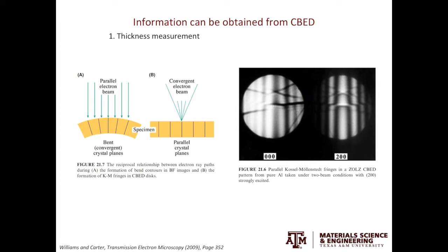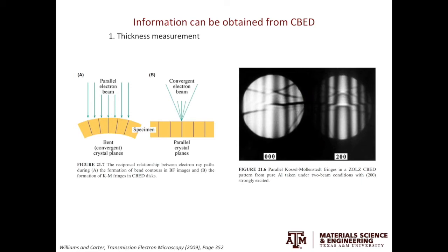To measure the thickness of your TEM foil, you need to tilt the specimen to a two-beam condition. This is your direct beam disk, and this is the diffracted beam disk. Again, you can see those bright, dark, bright, dark fringes inside the disks. On the left is a schematic of what you see. To calculate the thickness of your specimen, you need to locate the center line of the diffracted disk. Then, you locate the first dark fringe you see. The distance between the center line and the first dark fringe.